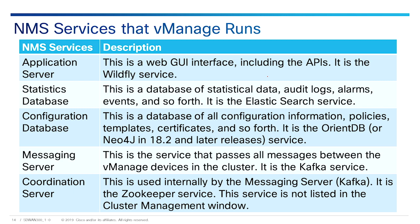From the cluster management window, you can select which services to run on which devices. For example, you might want to add a fourth vManage to load balance more vEdge devices, in which case you would disable the statistics and configuration database on one of those vManage devices, because those services must run on an odd number. So if you have nine vManage servers and disable services on one, you now have an even number, so you need to disable on yet another to maintain an odd service count. You may also want to run the configuration database on only a single vManage to reduce the load.